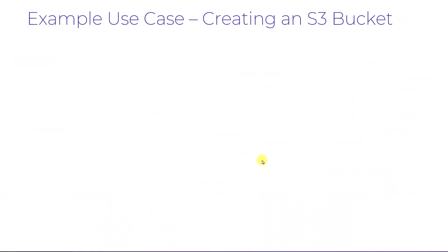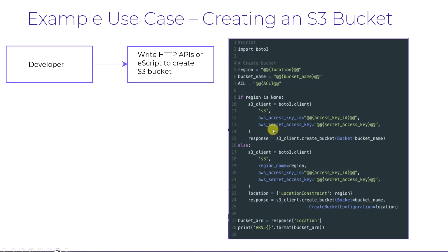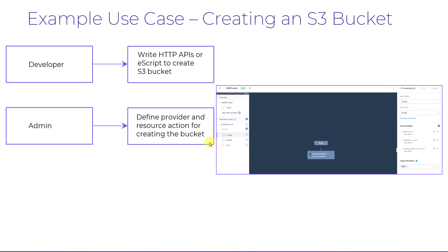To take an example use case, let's think about an IT admin who wants to create a runbook that includes a task for the creation of an AWS S3 bucket. Previously, the developer would have to code this task using HTTP APIs or e-scripts to create an S3 bucket. With the self-service custom provider feature, an admin can now create a custom provider based on AWS and define a resource type and action to create the bucket along with any required inputs. Once created, this action is predefined and reusable across runbooks.